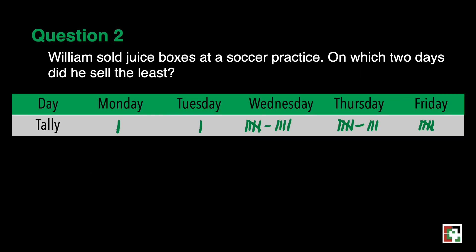Second question: William sold juice boxes at a soccer practice. On which two days did he sell the least?